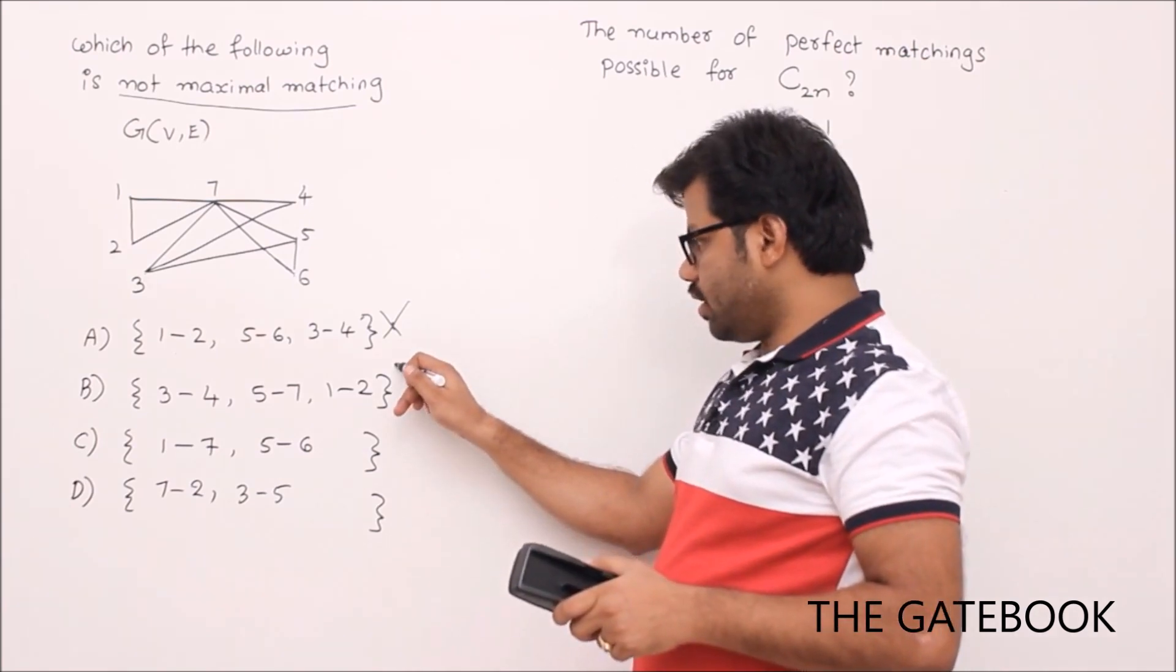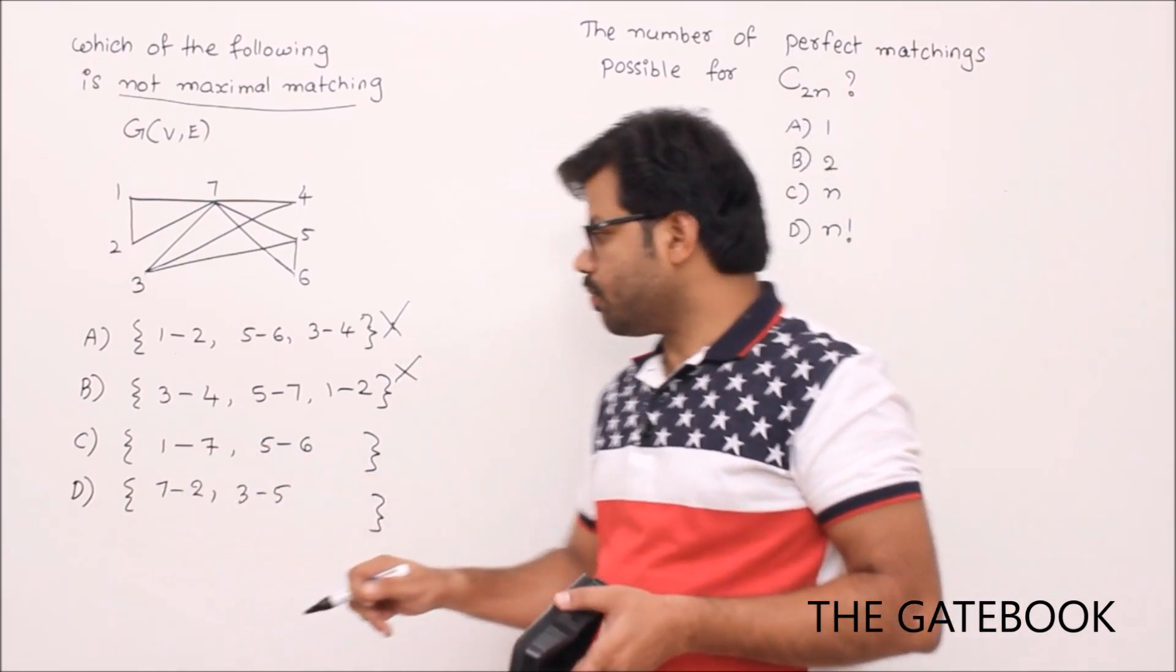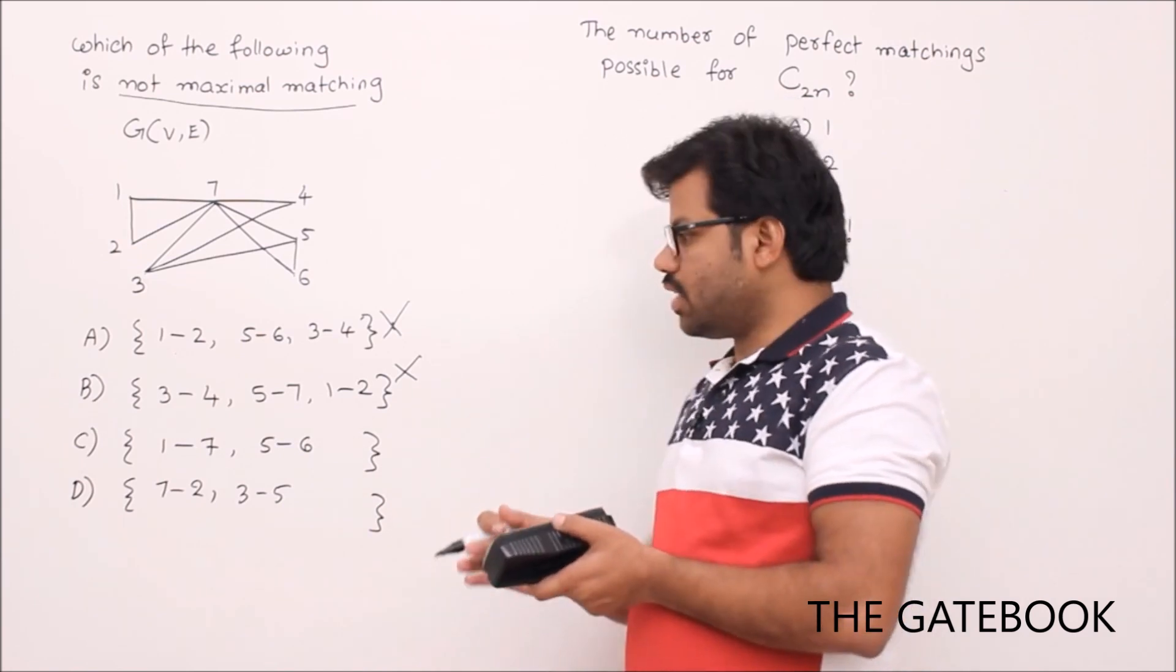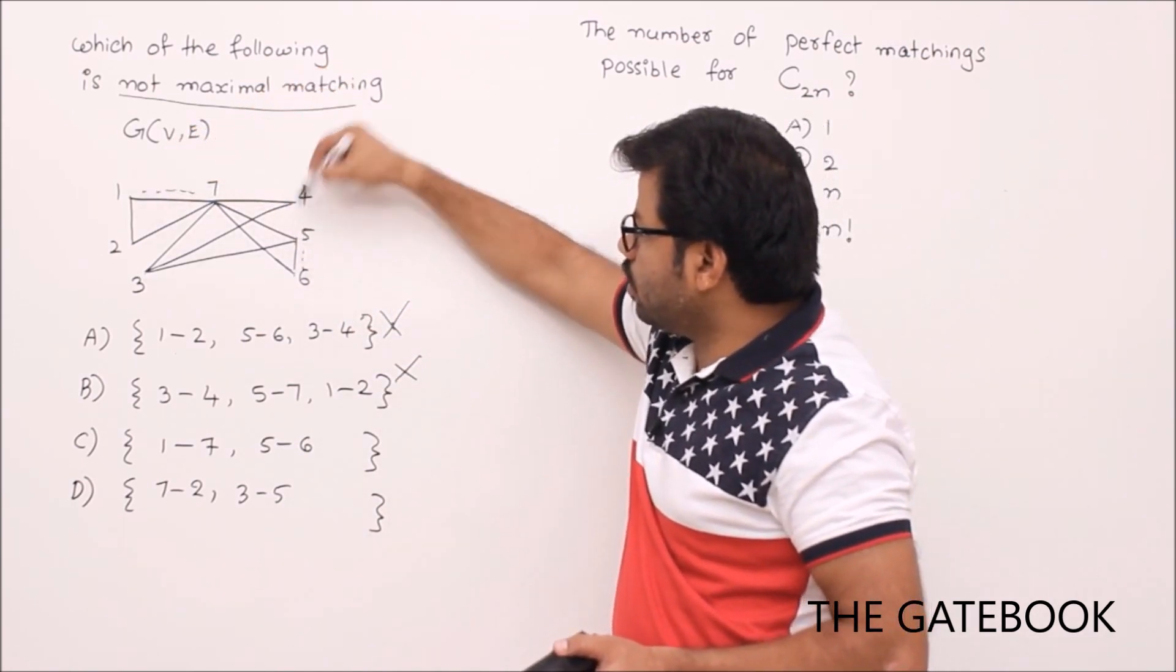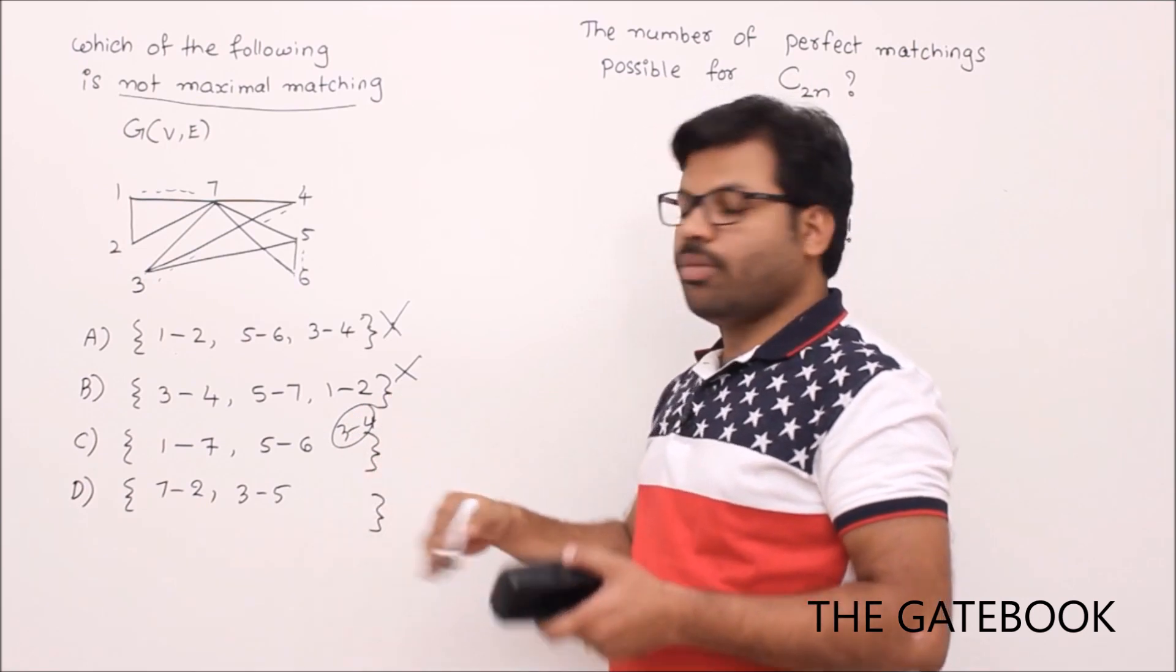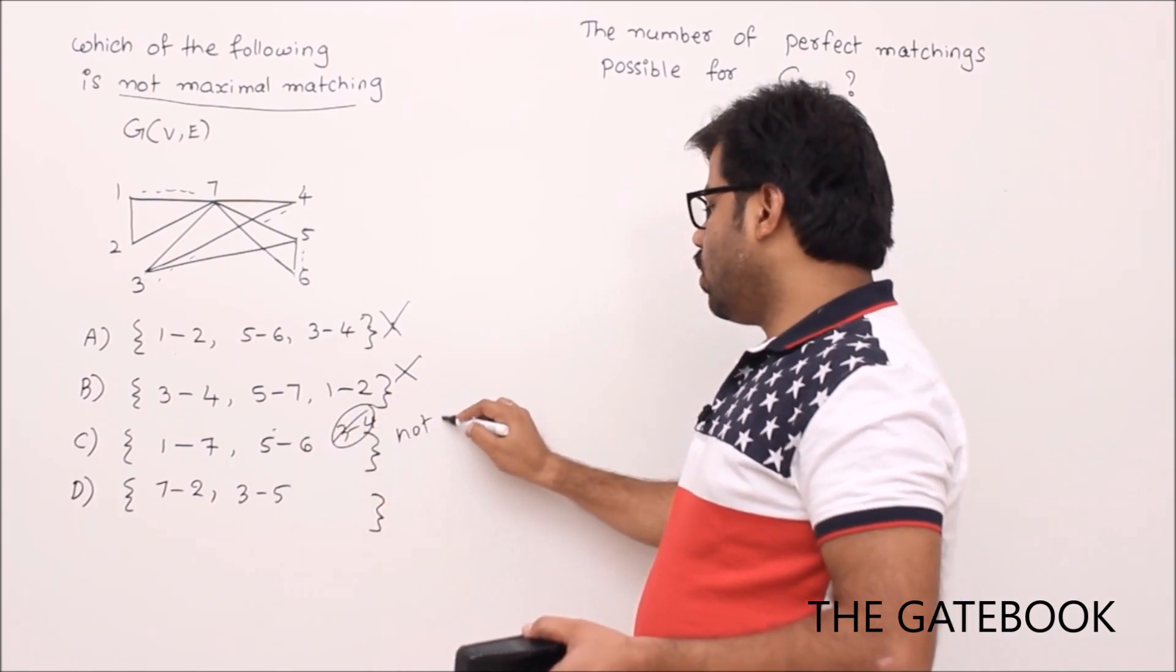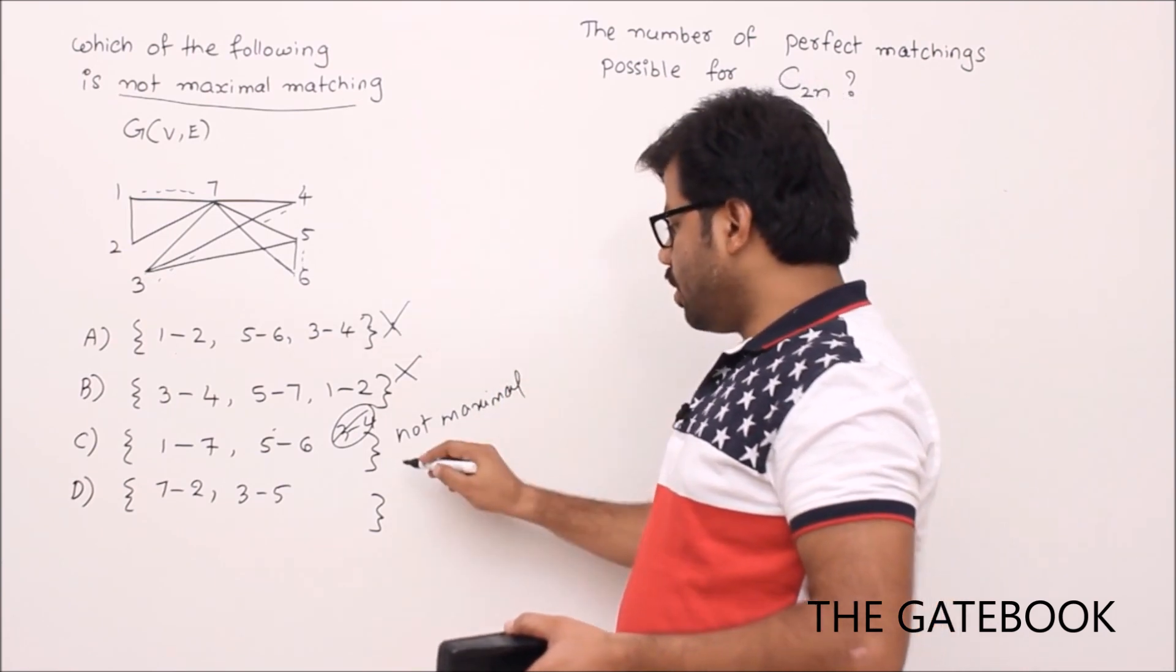Already six vertices are covered, you can have at most one new vertex. This is definitely matching which is maximal matching, but I want not maximal matching. Let's try with option C: 1-7, 5-6. There is a scope of adding an edge. 1-7, second 1, 5-6 - yes, we can happily add 3 to 4. You can add 3-4 further and form a new matching.